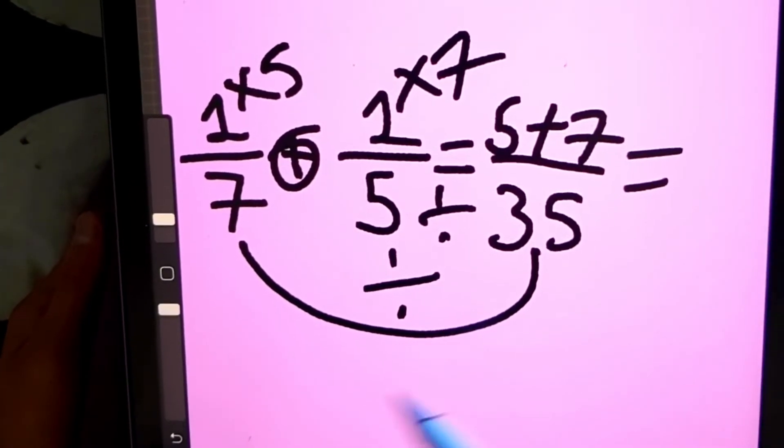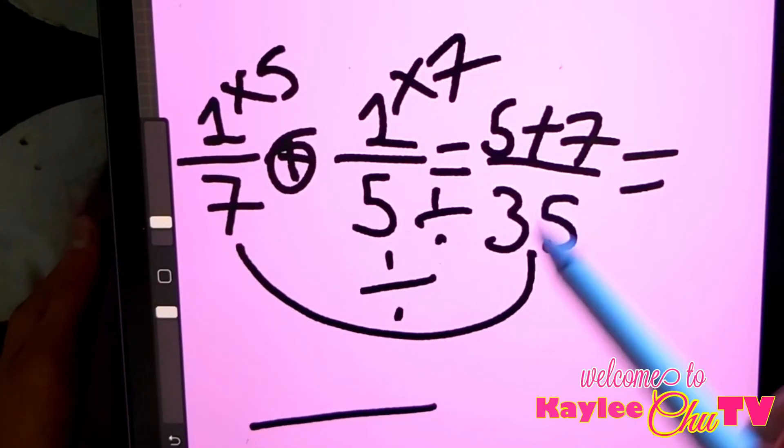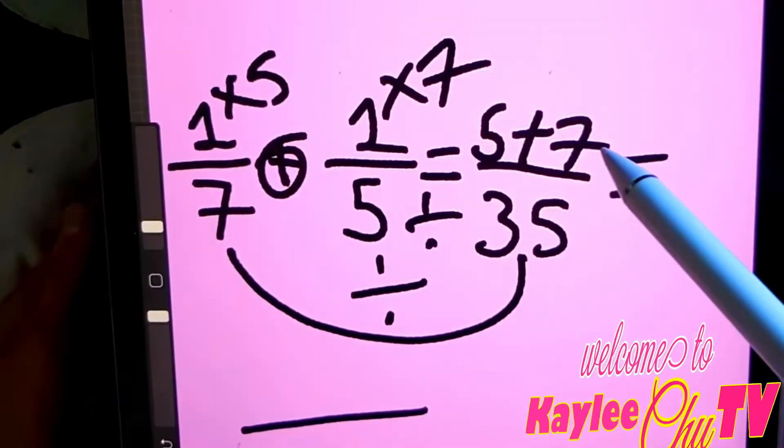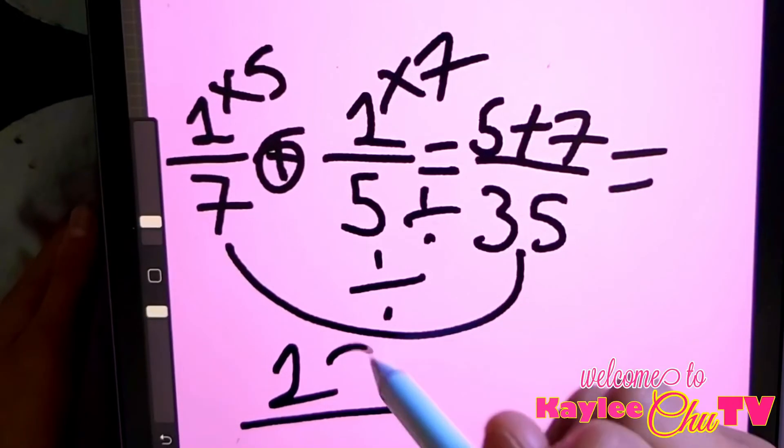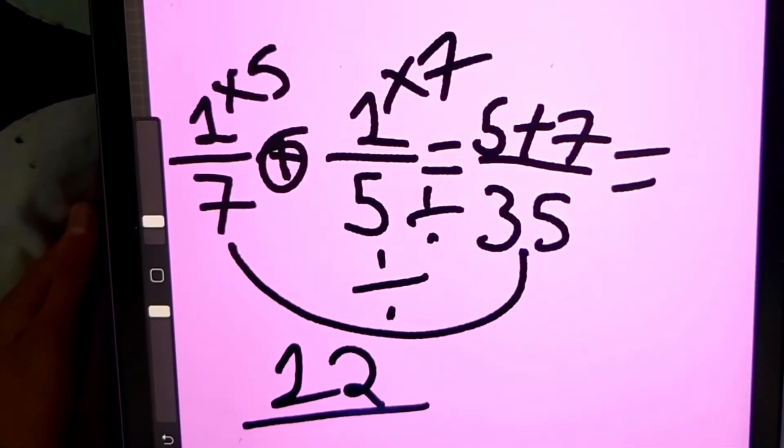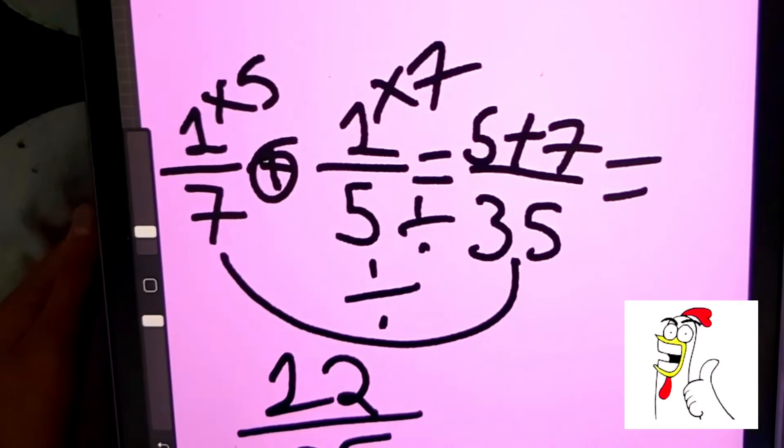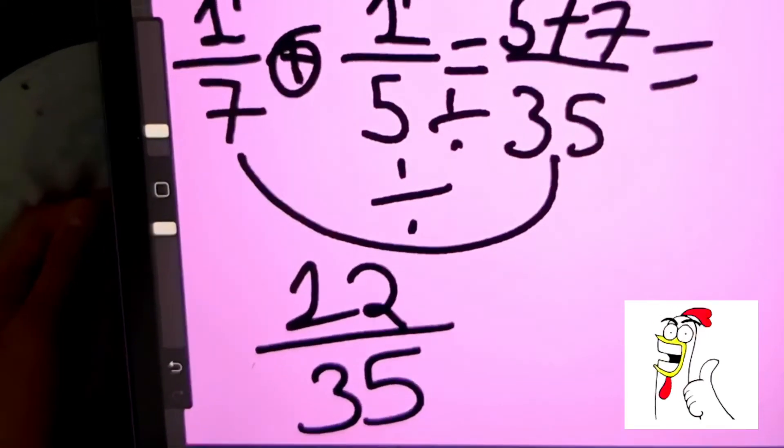It will equal. I put the equal right here. So five plus seven is twelve. And then we have thirty-five at the bottom. Right there. So we have twelve over thirty-five.